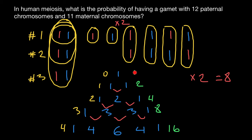The row number correlates directly with the power of two for the row sum. Row zero corresponds to 2⁰, row one to 2¹, row two to 2², row three to 2³, and row four to 2⁴. This relationship will be key to solving our problem.